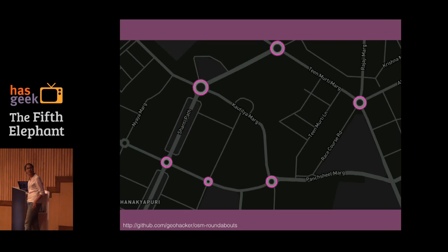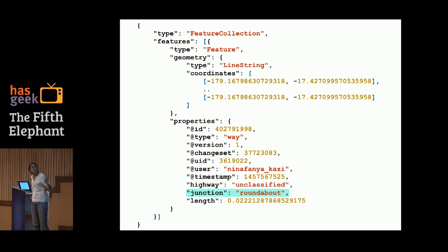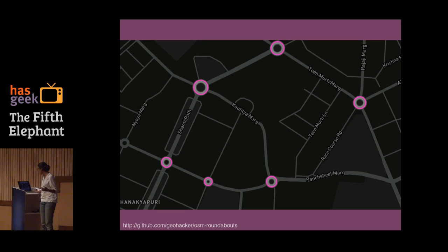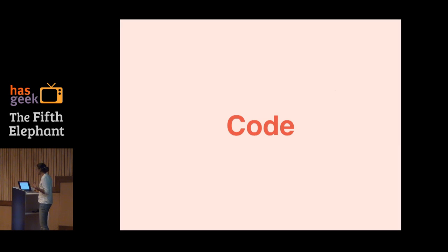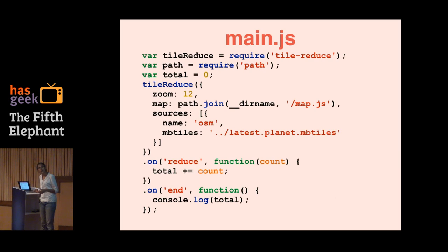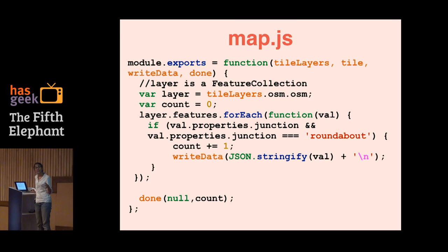What does a roundabout feature look like? I'm sure all of you have seen these circles when driving — there are so many of them in Bangalore. As data, this feature is a line string — it's important to note that it's not a polygon because it's not filled inside, it's a line string. It contains many coordinates, and most importantly it contains a property called 'junction' whose value is 'roundabout'. Now let us quickly look at some code. All TileReduce scripts have two parts: the main part where you require TileReduce and make calls to it, and the map script, which runs the map operation on each vector tile and is called for every tile in your tileset.